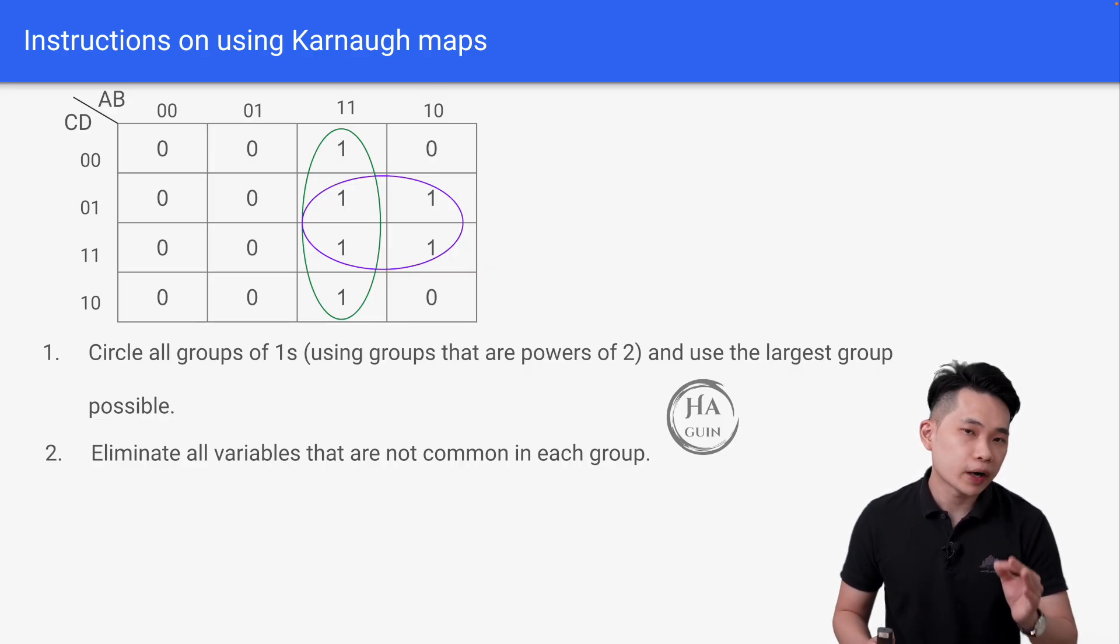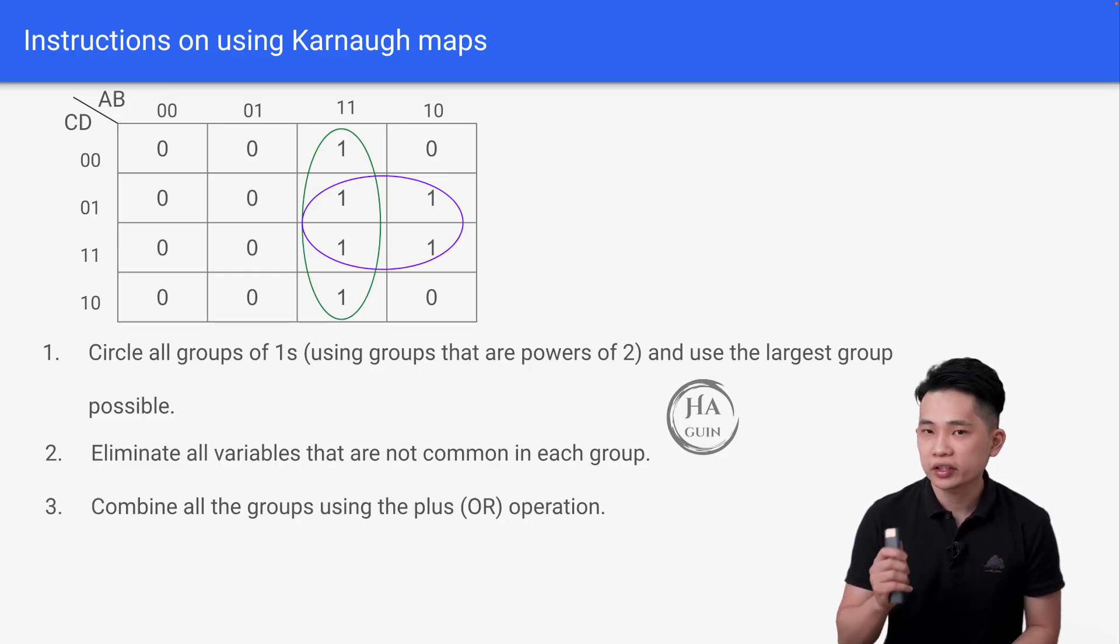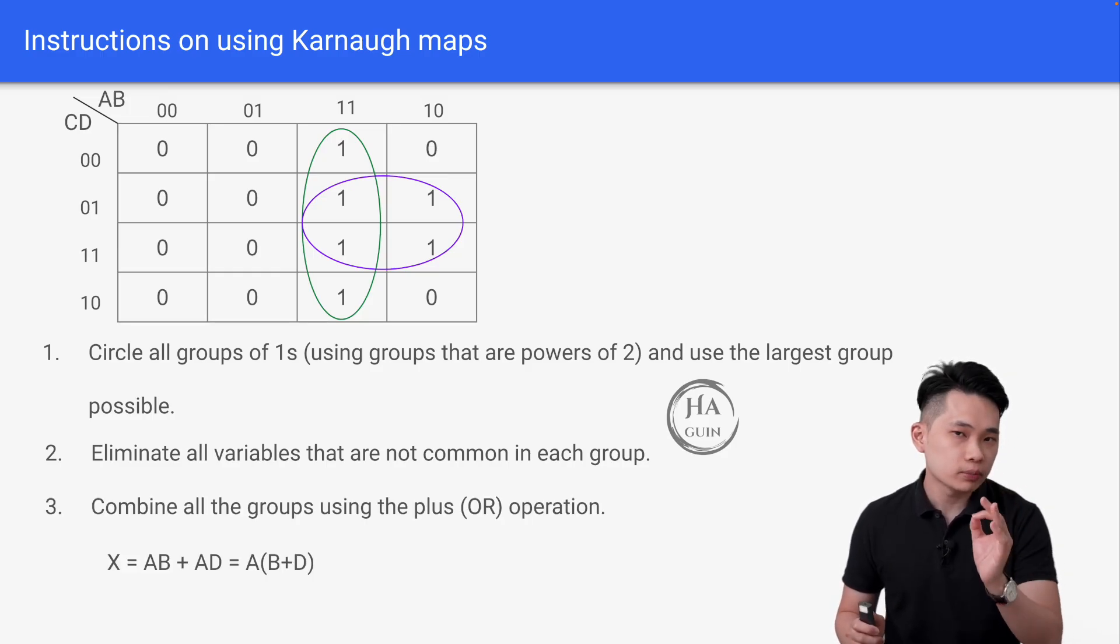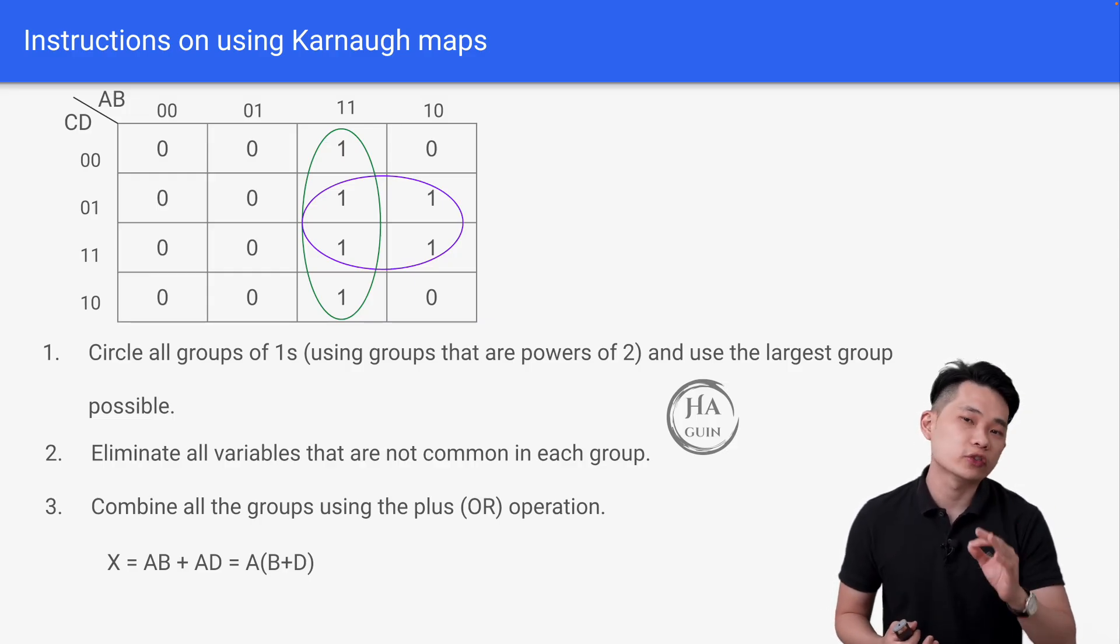Finally, we can combine all the groups using the plus which is the OR operation, resulting in X equals AB plus AD which is also equal to A bracket B plus D in simplified form. So this is how you can use these 3 steps to form the Boolean expression using Karnaugh maps. Once you know the hang of it, it's actually quite straightforward.